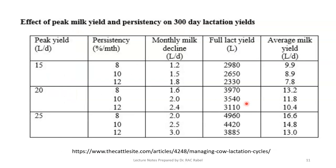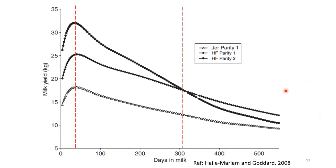If asked what total lactation yield to expect from an animal that gave 30 liters during peak and lactated the entire 305 days, you multiply by approximately 150 to 200 to get the estimated total, then divide by 305 to get the average daily yield. Under extremely good management conditions, the multiplier can be as high as 220. This is also useful when purchasing animals who have already peaked, to estimate their value.